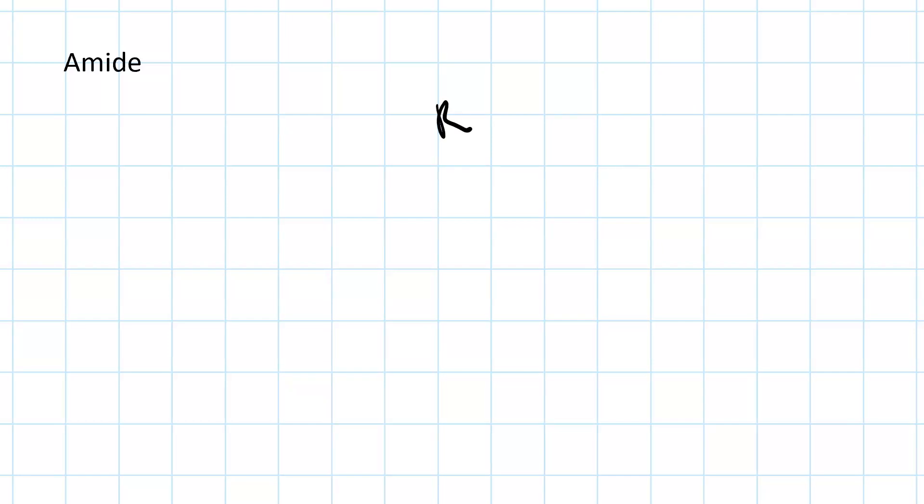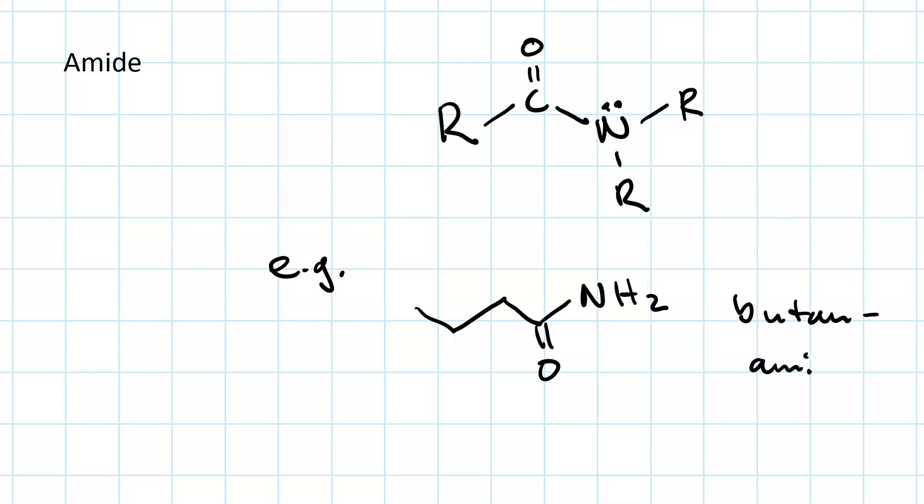An amide has an amino group adjacent to a carbonyl group. So here's your carbonyl and your amino group. Here's an example, butanamide. And its condensed structure.